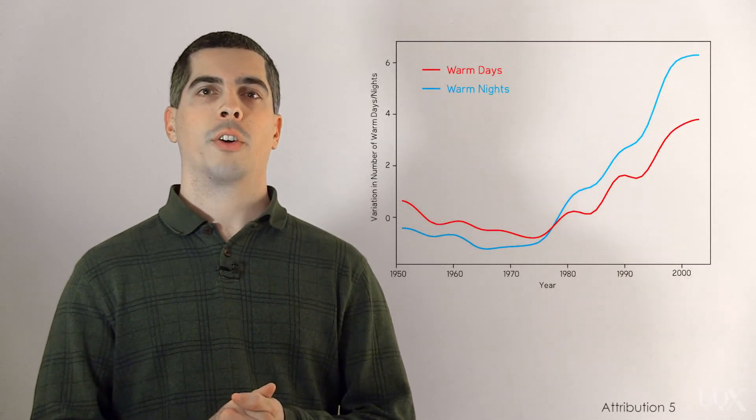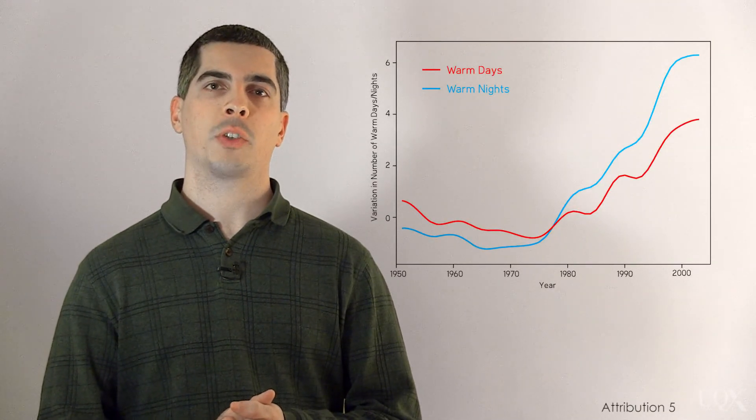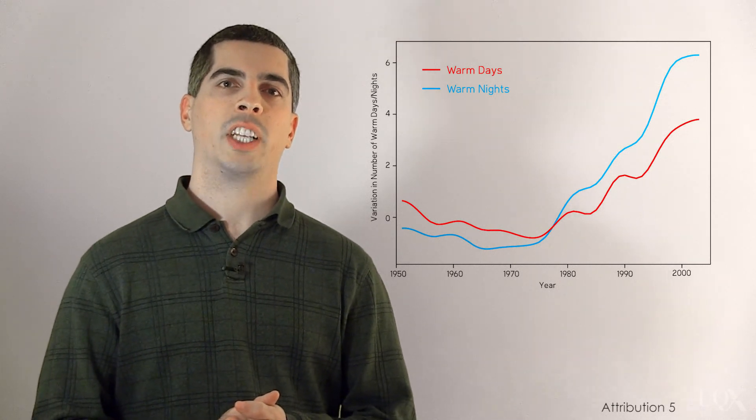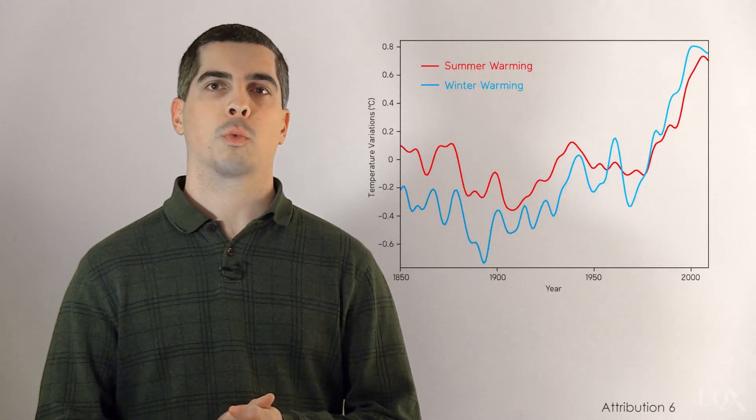These expected patterns of global warming give scientists a clear test to determine whether the evidence matches the fingerprints of human or solar-caused warming. It took over 130 years before John Tyndall's prediction was confirmed, but over the last few decades, surface measurements have found nights warming faster than days and winters warming faster than summers.